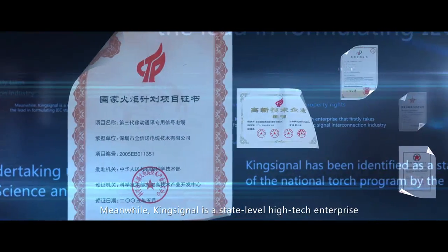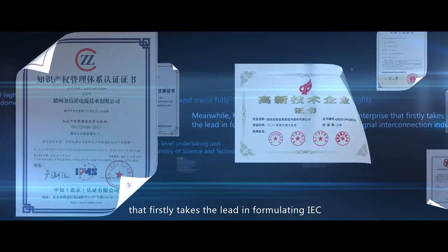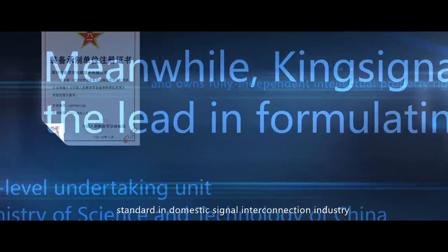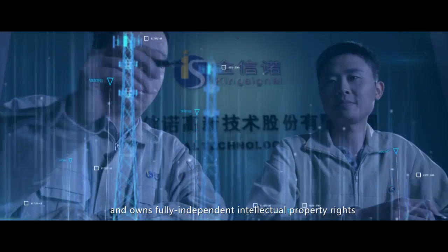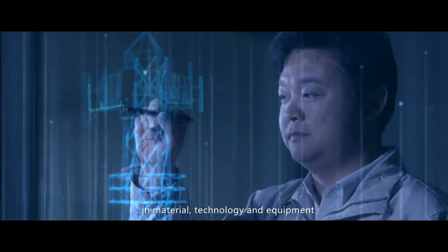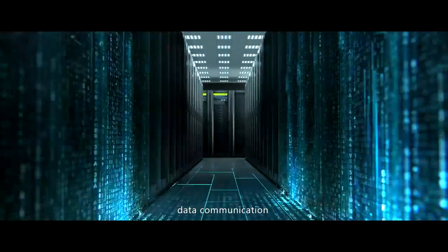Meanwhile, King Signal is a state-level high-tech enterprise that firstly takes the lead in formulating IEC standard in domestic signal interconnection industry and owns fully independent intellectual property rights in material technology and equipment for mobile communication, data communication, space flight and aviation, ocean exploration, and defense.